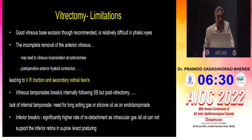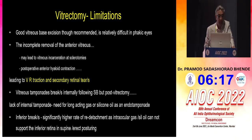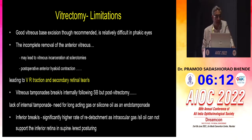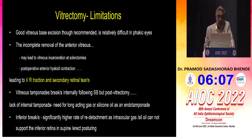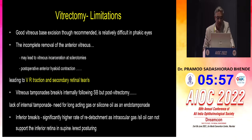However, good vitreous base dissection, though recommended, is relatively difficult in phakic eyes. This incomplete removal of anterior vitreous may lead to vitreous incarceration at the sclerotomy site, and subsequently postoperative anterior hyaloid contraction can worsen traction, leading to secondary internal breaks. Additionally, once vitreous is removed, you don't have internal tamponade, and you need either gas or oil to tamponade the eye internally.